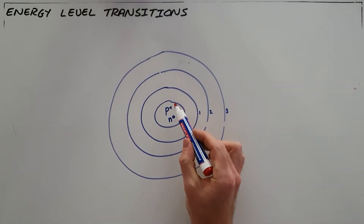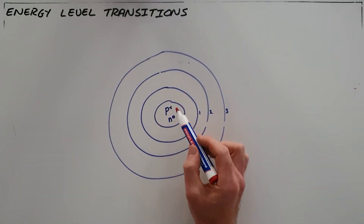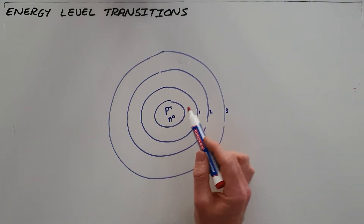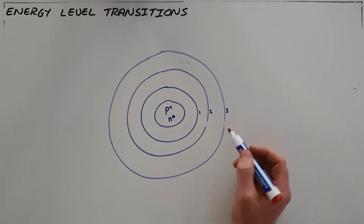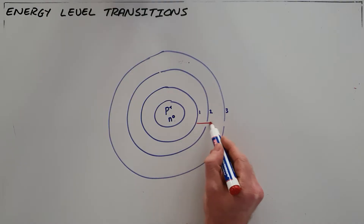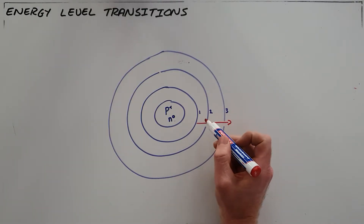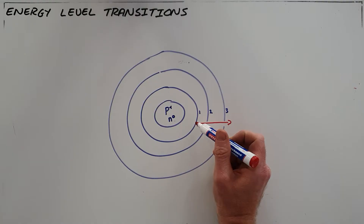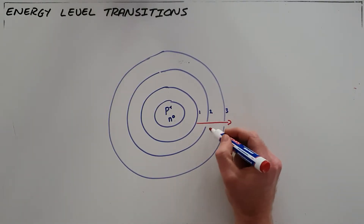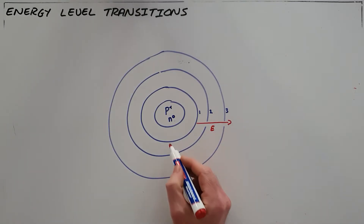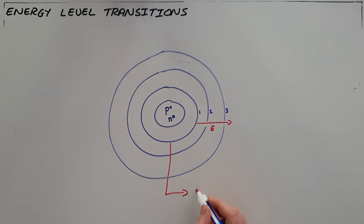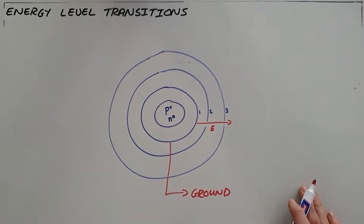We know that the atom consists of a small dense nucleus that contains protons and neutrons at the center, and the electrons are arranged in energy levels around the nucleus in order of increasing energy. The electrons in the first energy level have the least energy, and every energy level outward has more energy. Since the first energy level has the lowest energy, we often refer to that as the ground state — an electron in the first energy level is in the ground state because it has the lowest possible energy.